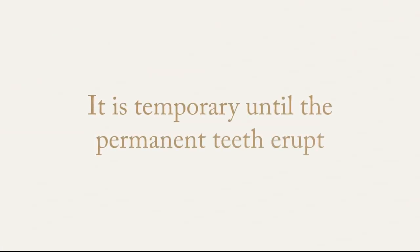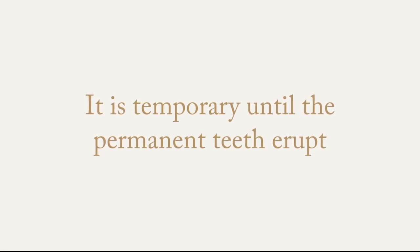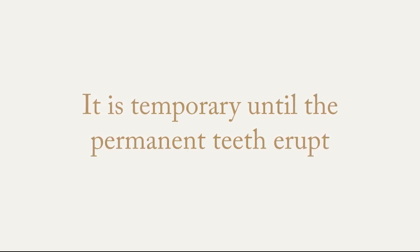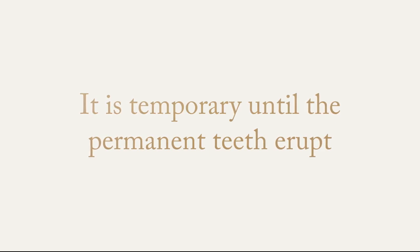The kiddie partial denture is a temporary solution to restore the aesthetic and function for the patient, whether they have ectodermal dysplasia or missing primary upper anterior teeth. It is temporary until the permanent teeth erupt, in order to maintain the space for the permanent dentition.